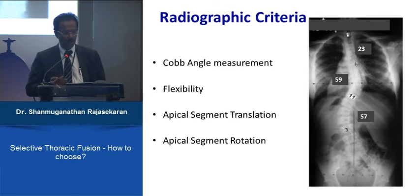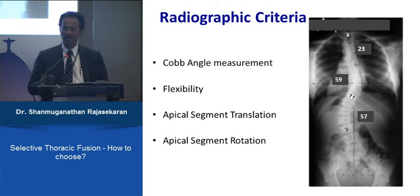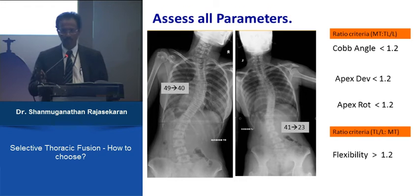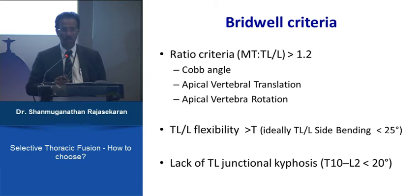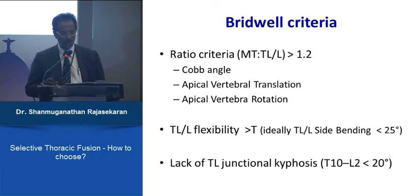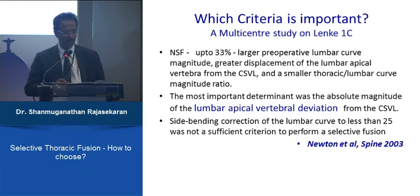Radiographic criteria include Cobb angle, flexibility, apical segment translation, and apical segment rotation. When comparing thoracic and lumbar curves across all these parameters, there is a magic figure of 1.2 — the thoracic curve must exceed the lumbar curve by a ratio of at least 1.2 in everything. This is also the Bridwell criteria: if the Cobb angle ratio, apical vertebral rotation ratio, and flexibility ratio are all greater than 1.2, and there is no thoracolumbar junctional kyphosis, the case is suitable for selective thoracic fusion.